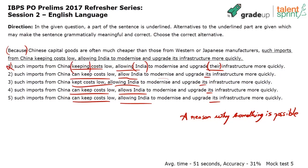Also, the continuous tense 'keeping' in option one is incorrect because of the past tense context. And 'kept costs low' in option three is past tense, which I don't need. So I eliminate options one and three. Option two — 'such imports from China can keep costs low, allow India' — is missing 'and' before 'allow.' If I add 'and,' option two would be correct, but as it stands, it's out. Now I have to choose between four and five. Option four has 'allows India' — but imports is a plural subject, so it should be 'allow,' not 'allows.' So option four is out.